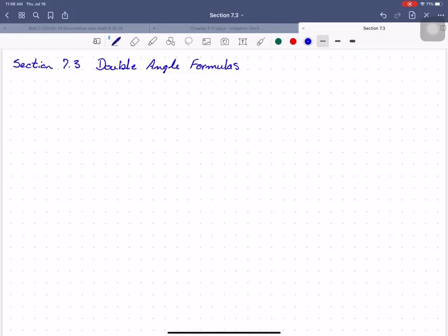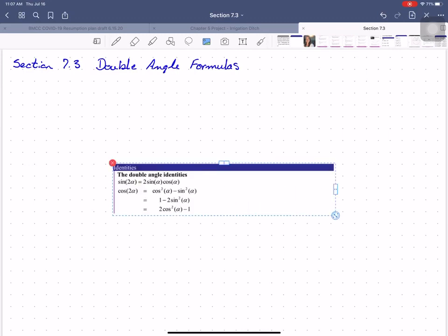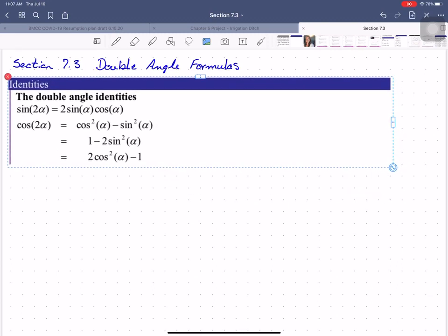Hi, welcome back. We're going to talk about the double angle formulas. As I mentioned in the introduction video, the double angle formulas are a subset of, well, they're actually a consequence of the angle sum identities.